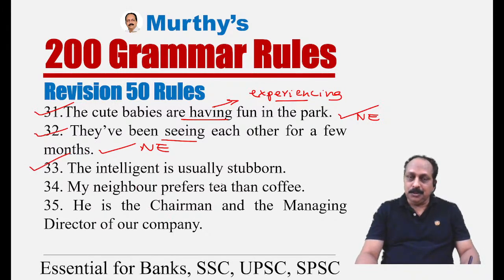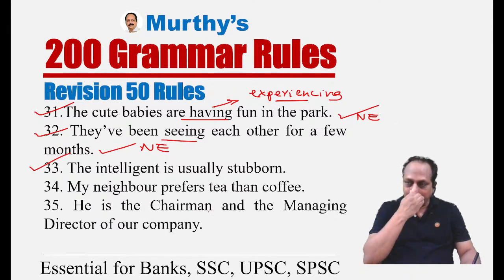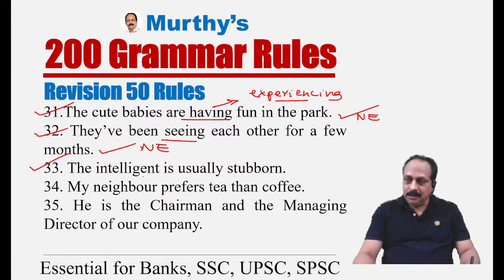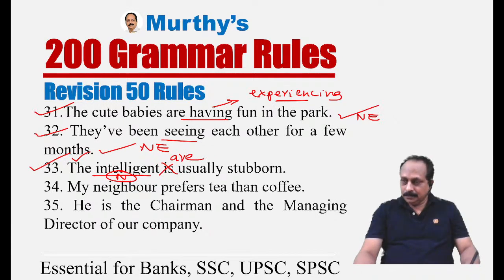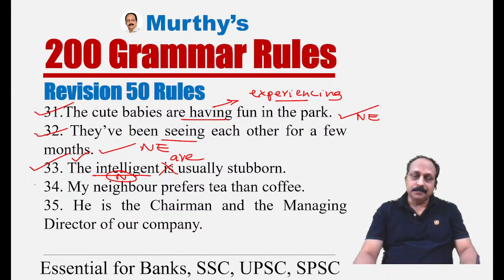Sentence thirty-three: 'The intelligent is usually stubborn.' The word 'intelligent' is an adjective used as a noun here. When we use an adjective as a noun, we must use the definite article 'the' and the verb in plural form — not singular. The correct sentence is: 'The intelligent are usually stubborn.'